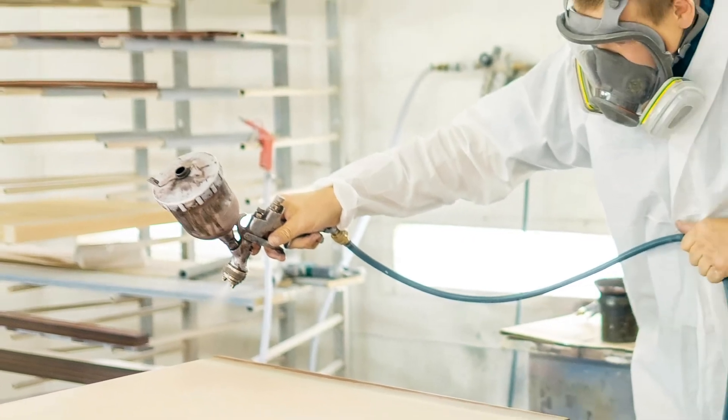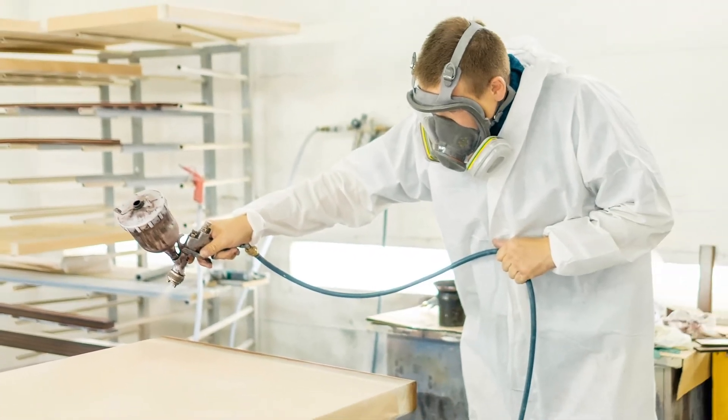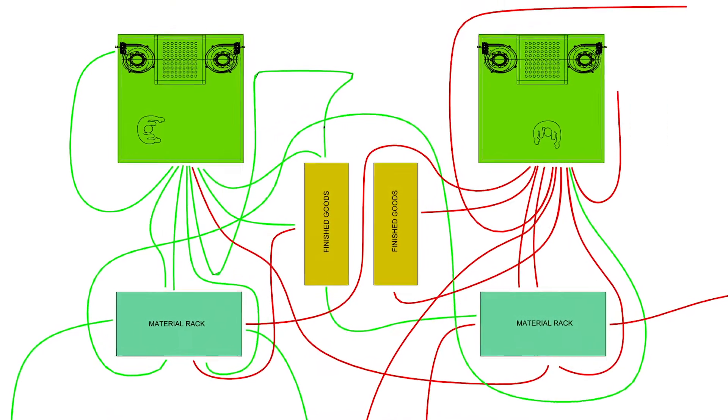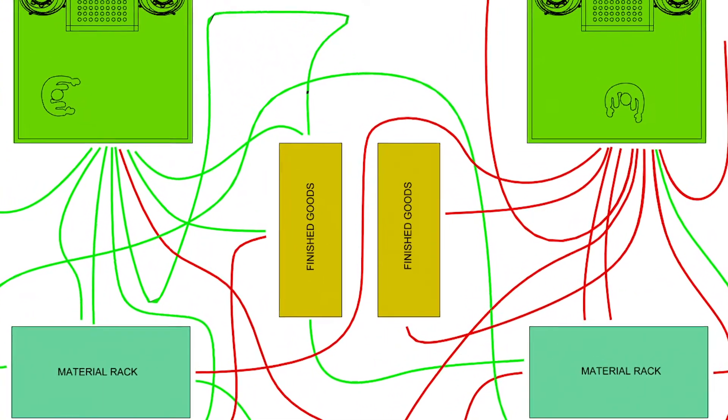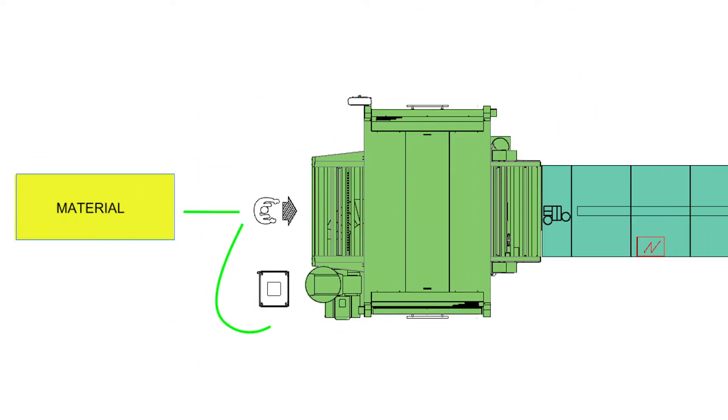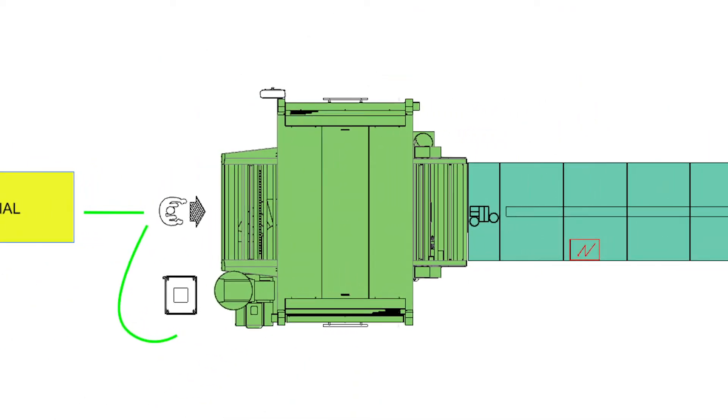Typical multi-booth hand spray operations require a great deal of movement by skilled finishers. This is best demonstrated by the spaghetti diagram used in lean manufacturing. A spaghetti diagram of a two-booth operation shows the high degree of wasted movement. The reciprocating sprayer untangles the spaghetti, making the process linear, thus increasing output significantly.